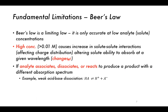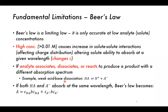When we measure Beer's Law, we are measuring the absorbance at only one wavelength. An example is weak acid-base dissociation — depending on how much is dissociated, we may get different absorption spectra. If both HA and A⁻ absorb at the same wavelength, Beer's Law becomes: absorbance at a given wavelength equals epsilon of HA times B times concentration of HA, plus epsilon of A⁻ times B times concentration of A⁻, where the two concentrations add up to the total concentration.